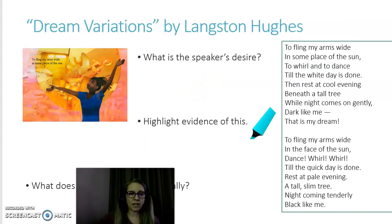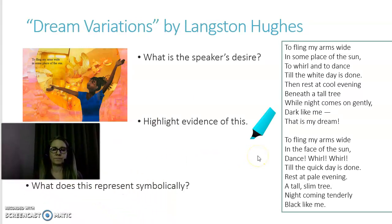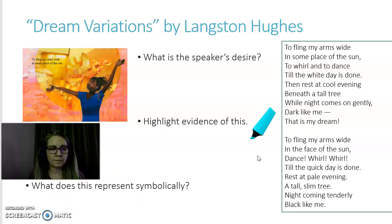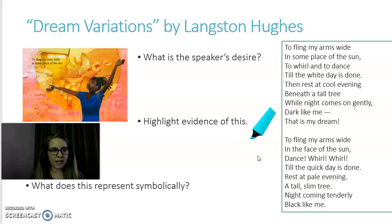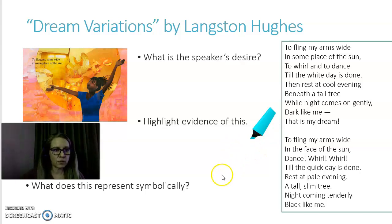Let's take a look at another one by Langston Hughes: 'Dream Variations.' Again, take a pause and please read through that. Now that you've had a chance to go through it, consider: What is the speaker's desire — what does the speaker really want? What evidence do you see of that in this poem, and what does that represent symbolically? Those are some things I'd like you to consider when reviewing 'Dream Variations' by Langston Hughes.